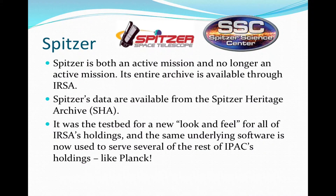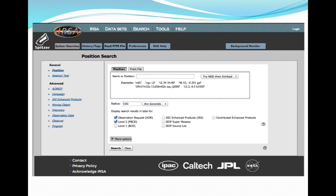Spitzer is both an active mission and no longer an active mission, because when it ran out of cryo that phase ended, and then we entered the warm mission. Its entire archive from both the cryo era and the warm mission era are both available through IRSA via the Spitzer Heritage Archive. The SHA was the testbed for a completely new look and feel for IRSA's tools. The first page you come to is a position search, which is what most people are doing, with other options on the left and bottom to control exactly what kind of search you're doing.